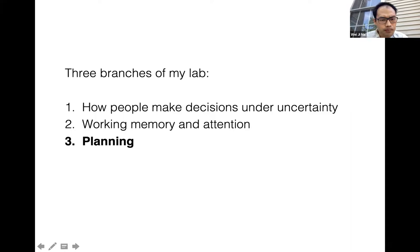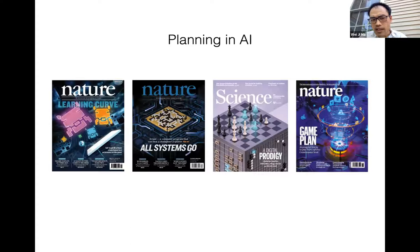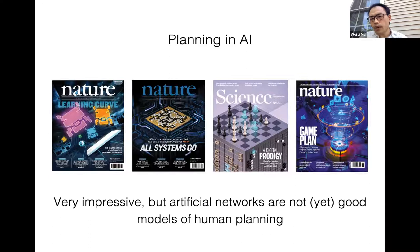A lot of exciting news has come from computers being able to play complex games, such as chess, Shogi, or Go — much of that coming from DeepMind. These deep neural networks solve planning problems at levels often way beyond what people can do. But the question is: do we really understand how people solve such complex planning problems?